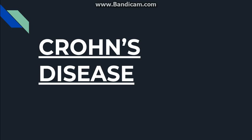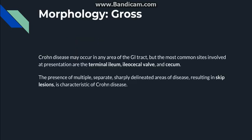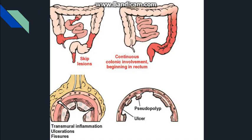Regarding the gross morphology of Crohn's disease: Crohn's disease can involve any area of the GI tract from the oral cavity to the anal region, but the most common sites at presentation are the terminal ileum, ileocecal valve, and cecum. A very characteristic finding is the skip lesion, where an involved area of intestine is followed by an uninvolved area and then another involved area.